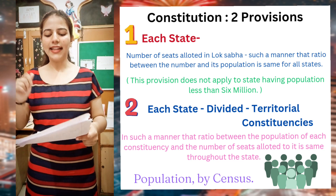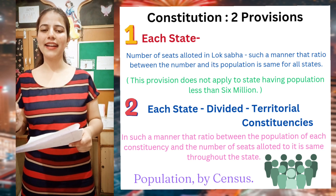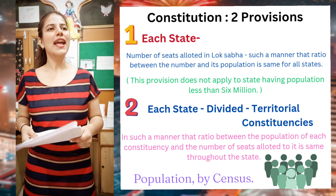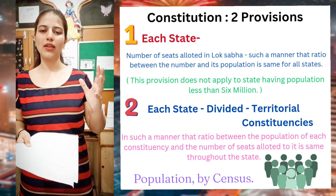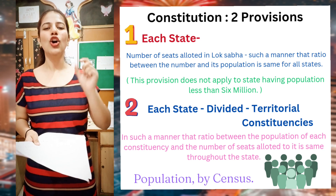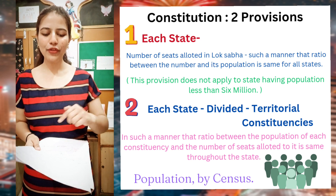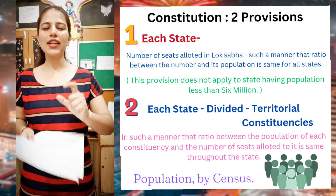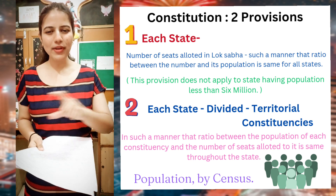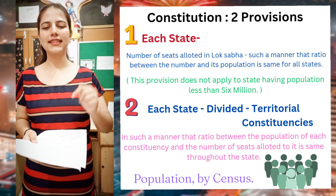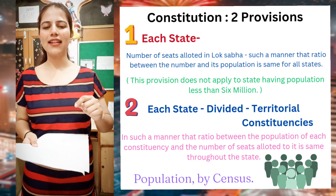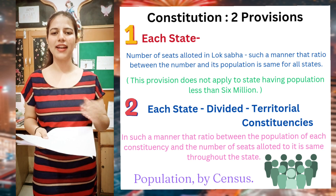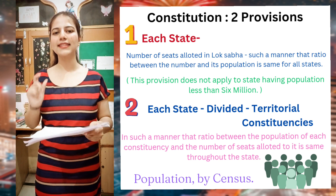The second provision regarding this is that each state, which we divide into territorial constituencies, we have to divide in such a manner that the population in one constituency and the number of seats will be the same. So from these two provisions, the constitution is ensuring that there should be uniformity — in the seats allocated to states and in the territorial constituencies within one state — they should be proportionate, uniform, and representative.